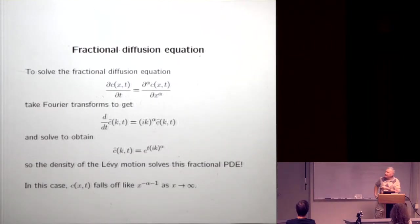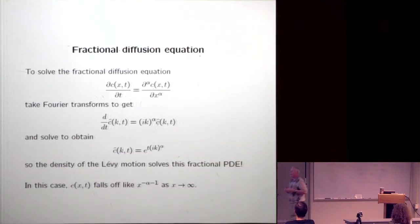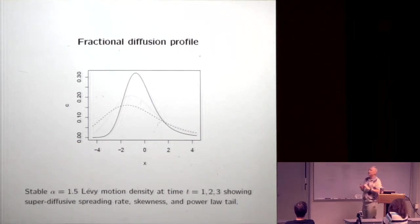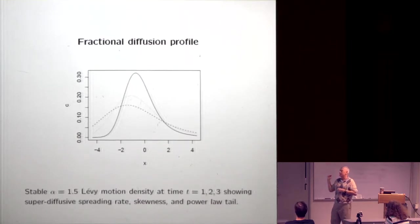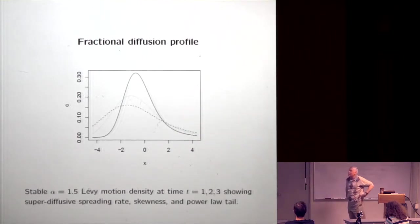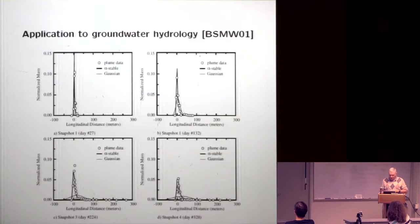The fractional diffusion profile is skewed to the right. With α = 1.5 it spreads like t^(2/3), so it's spreading faster and the peak is falling faster. These curves do have a mean, but since they're skewed the mean is not at the peak. And importantly, the tails fall off like a power law rather than like e^(−x²).